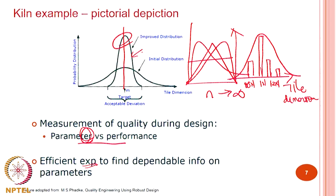Many real-life processes follow a Gaussian distribution — yes, there are always exceptions. As a matter of fact, we work on research areas where they do not follow a Gaussian distribution. But for this particular course, we will discuss only the Gaussian distribution, and you can take it from me that most of the real-life problems we will discuss will follow a Gaussian distribution.